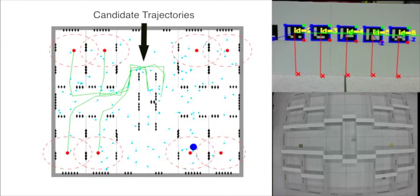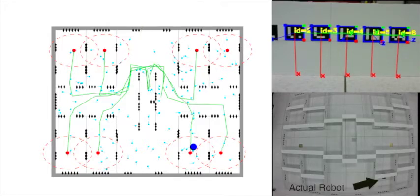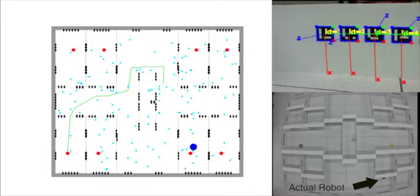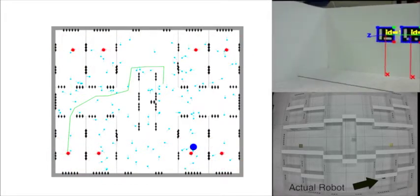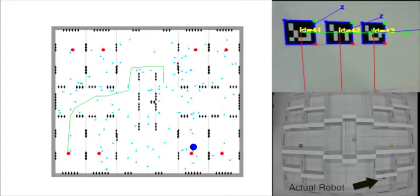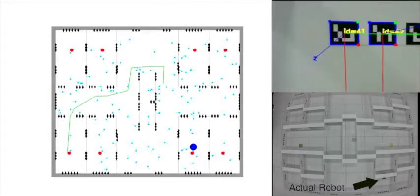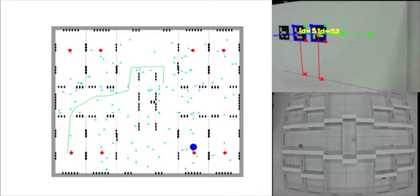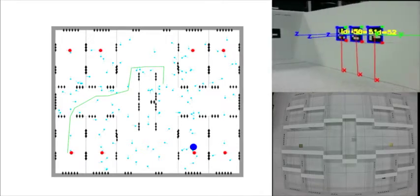The robot creates candidate trajectories and picks the one which is expected to result in the maximum information gain. Information gain is measured in terms of the expected reduction in the number of belief modes as landmarks are observed along a candidate trajectory. Once a policy is selected, it is executed by the robot in a closed-loop manner.